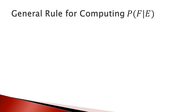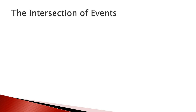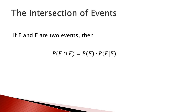Now we talked about the general rule for computing the probability of F given E. The probability of F given E equals the probability of E intersection F over the probability of E. This is the general rule. From this, the probability of E intersection F equals the probability of E times the probability of F given E.